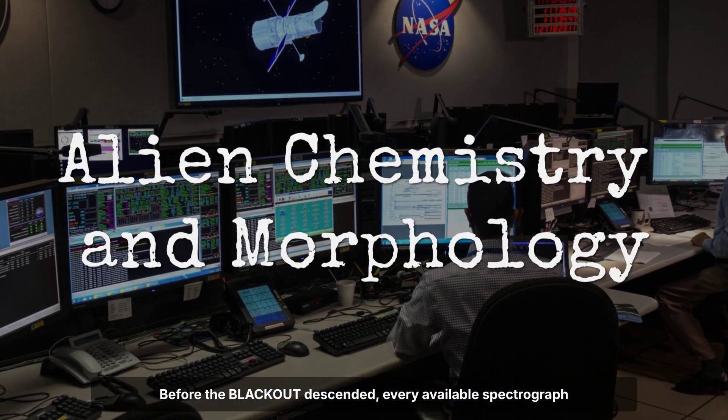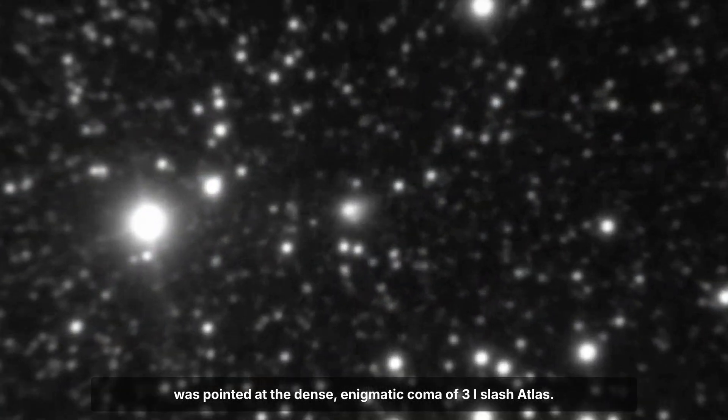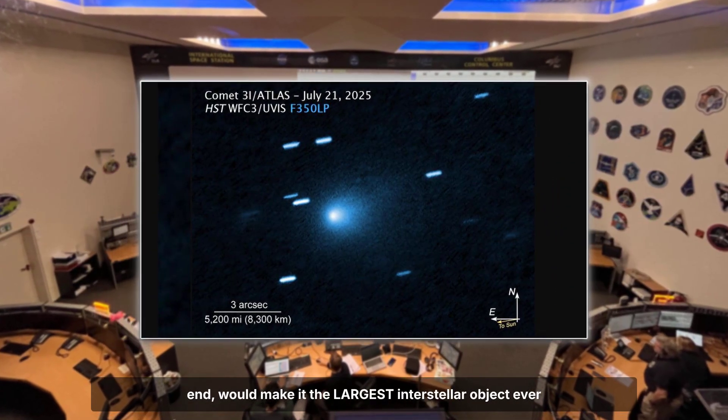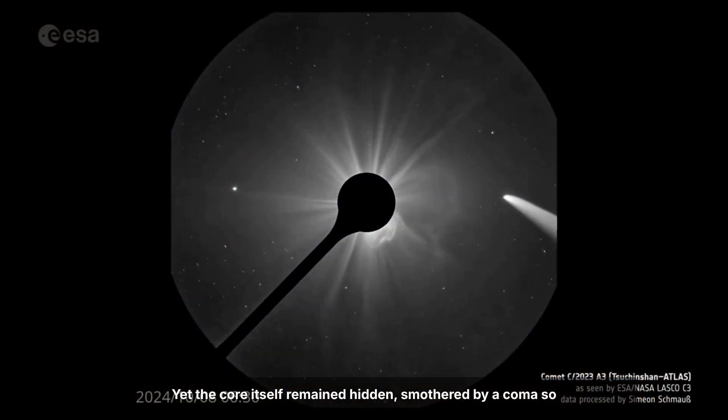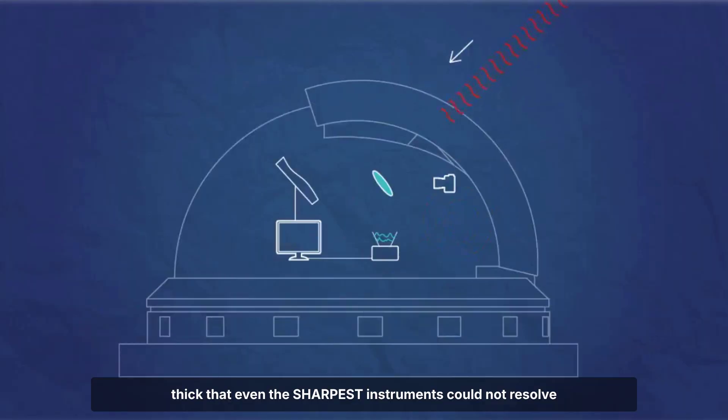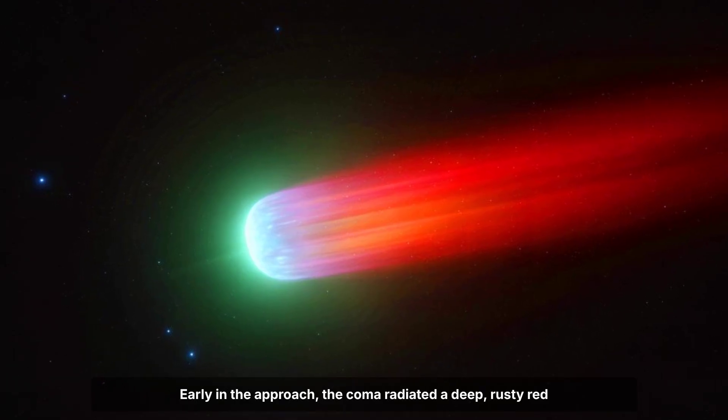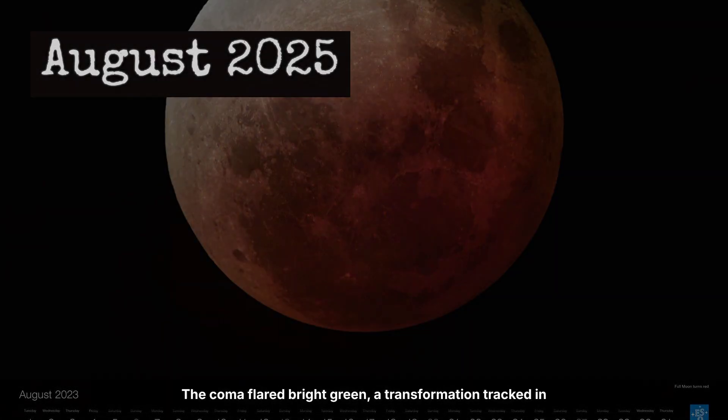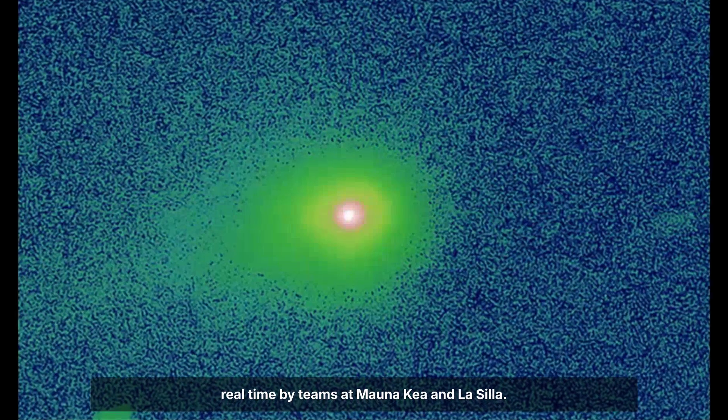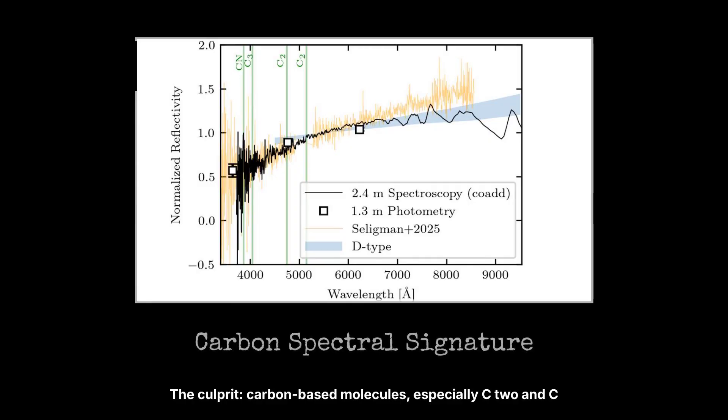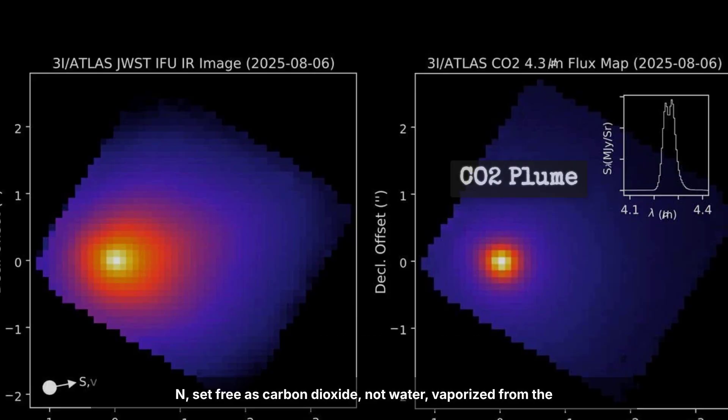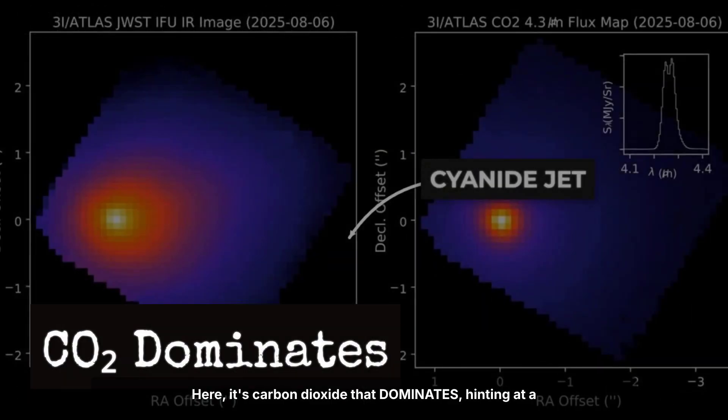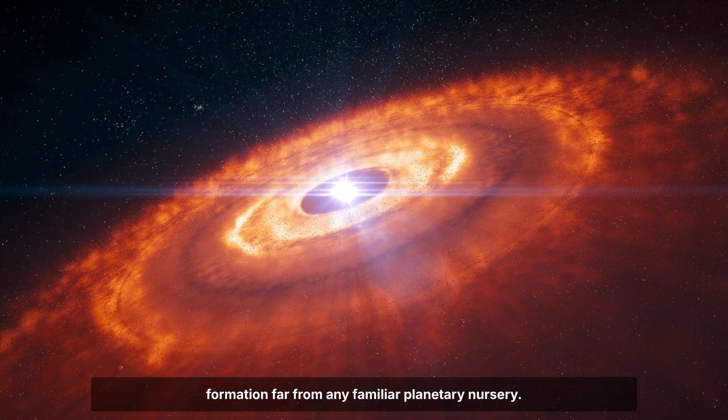Before the blackout descended, every available spectrograph was pointed at the dense, enigmatic coma of 3I-slash-Atlas. Initial estimates placed the nucleus somewhere between 5 and 50 kilometers across, a range that, even at the low end, would make it the largest interstellar object ever observed. Yet the core itself remained hidden, smothered by a coma so thick that even the sharpest instruments could not resolve its edges. Early in the approach, the coma radiated a deep rusty red, an unusual hue for a comet this close to the sun. By August, that palette shifted dramatically. The coma flared bright green, a transformation tracked in real time by teams at Mauna Kea and La Silla. The culprit, carbon-based molecules, especially C2 and CN, set free as carbon dioxide, not water, vaporized from the surface. In most solar system comets, water drives the show. Here, it's carbon dioxide that dominates, hinting at a formation far from any familiar planetary nursery.